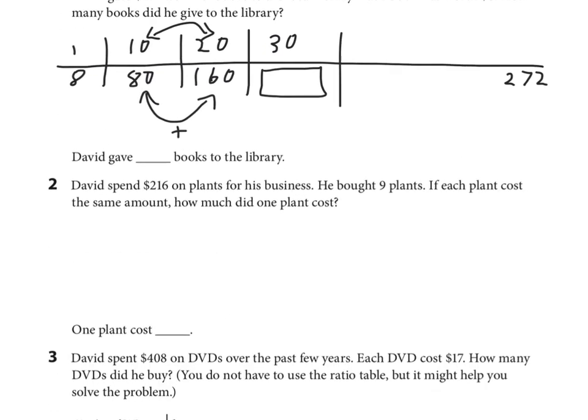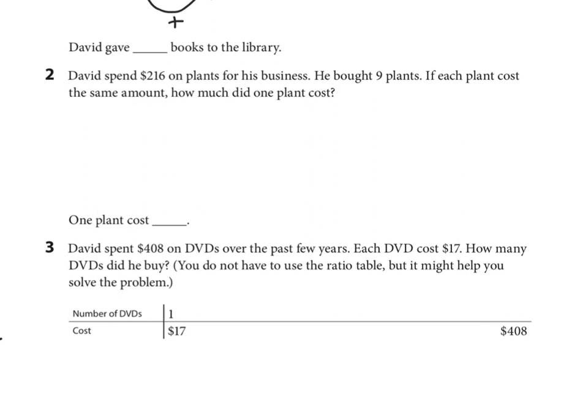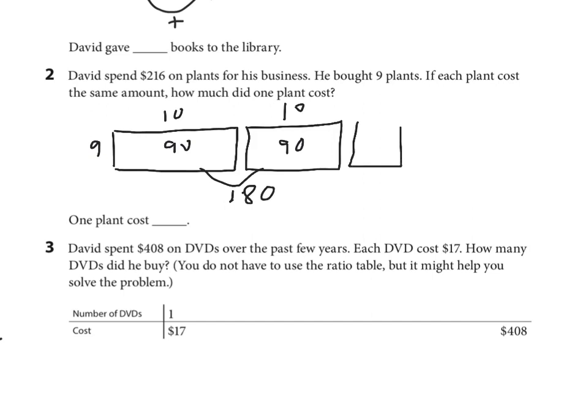Then about nine plants—he spent two hundred and sixteen dollars. How much did one plant cost? Let's do an array for this one. So I'm going to go 9 × 10, and then I'll do that again, and now I'm up to 180. How much more do I need to get to 216? Looks like I need 36 more, so I will let you figure out what number goes there and add them together.